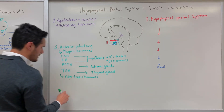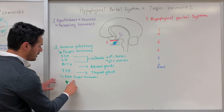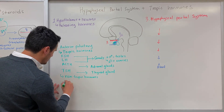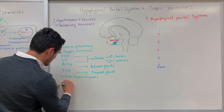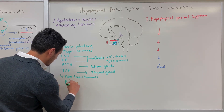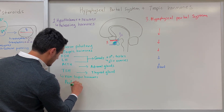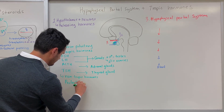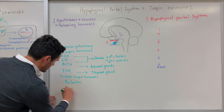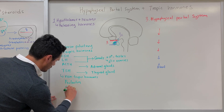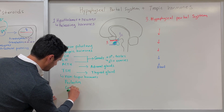Some of the non-tropic hormones include prolactin as well as growth hormone.